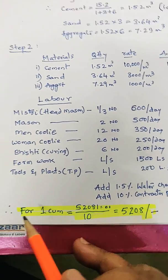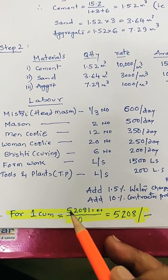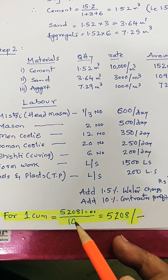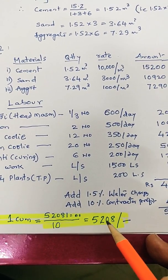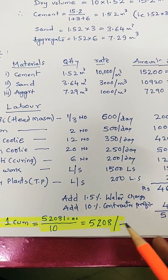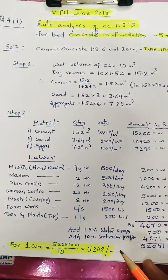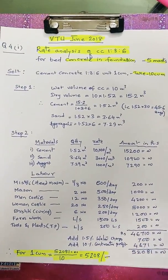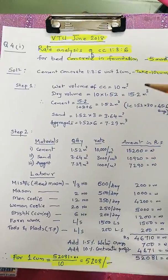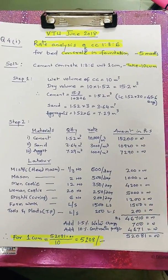Now we have to calculate for 1 cubic meter, that is 52,081 divided by 10, equals 5,208 rupees per cubic meter. So this is the problem of VTU carrying 5 marks. Thank you.